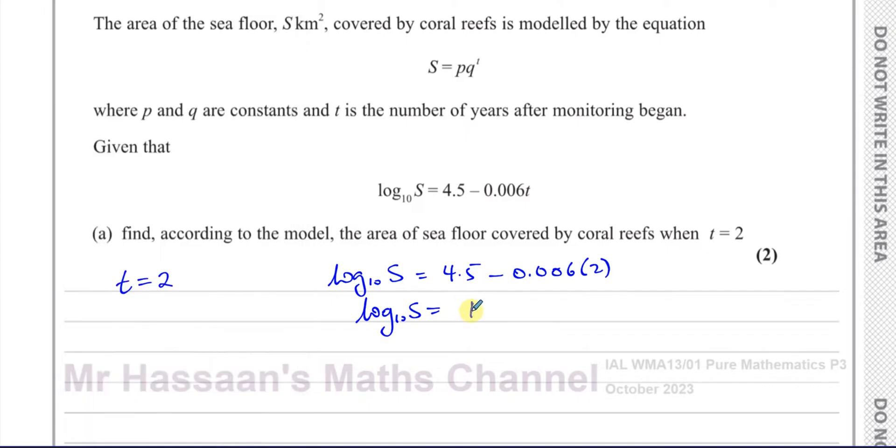That gives us 4.488. So we need to find what S is. We have log₁₀(S), so we need to get rid of this logarithm by rewriting it in index form. We know that log base a of b equals c can be rewritten: a is the base, c is the power, and b is the answer. So we can say 10 to the power of 4.488 equals S.